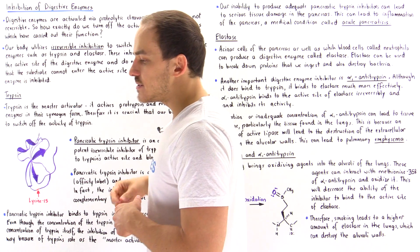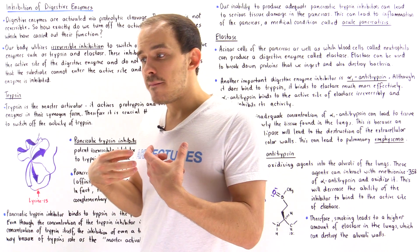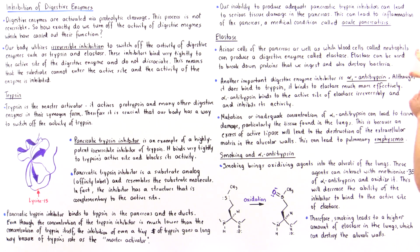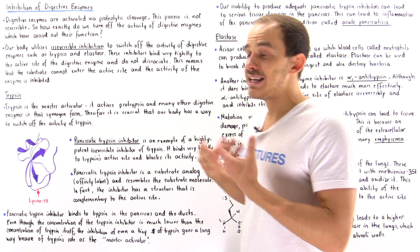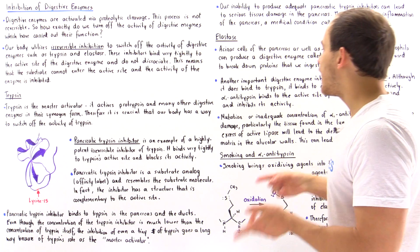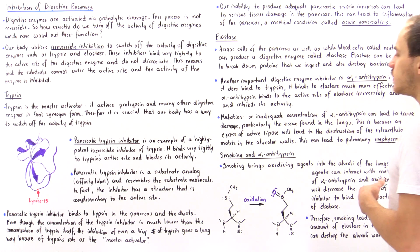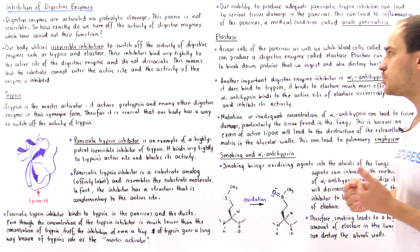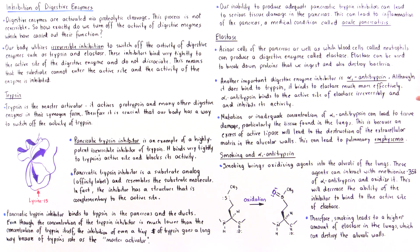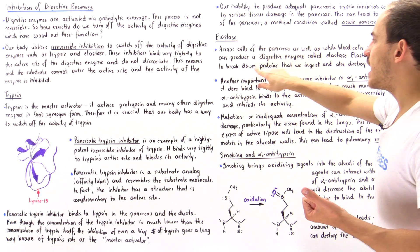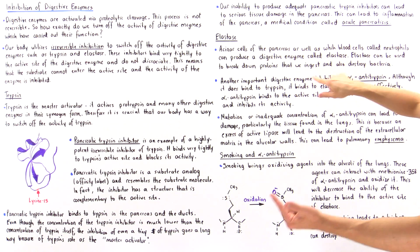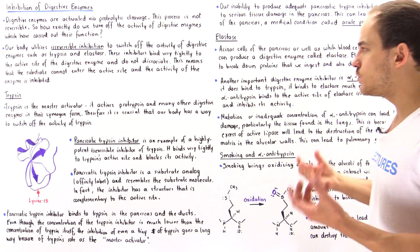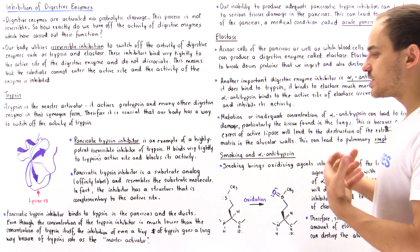Pancreatic elastase breaks down proteins we ingest, while neutrophilic elastase is used by white blood cells to break down and kill bacterial cells. However, neutrophilic elastase can also cause damage to our own extracellular tissue. So elastase can break down ingested proteins, destroy bacterial cells, and in some cases destroy host tissue.